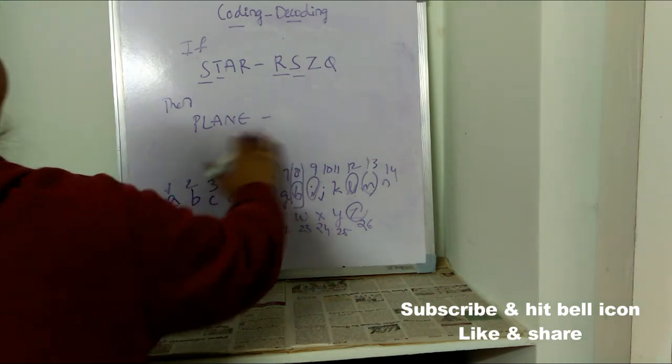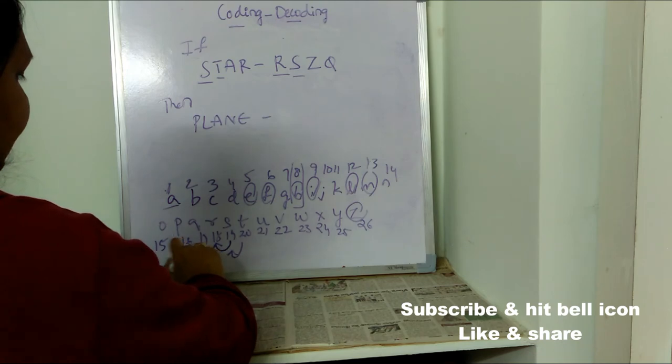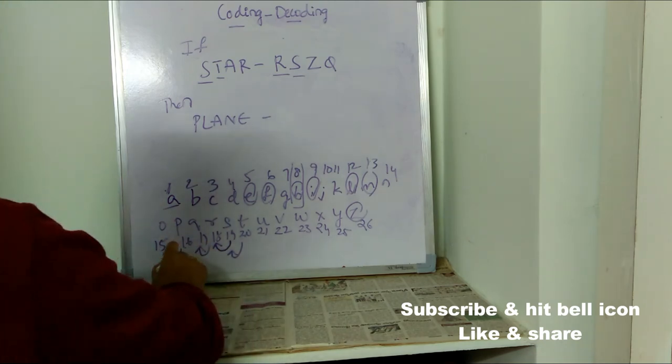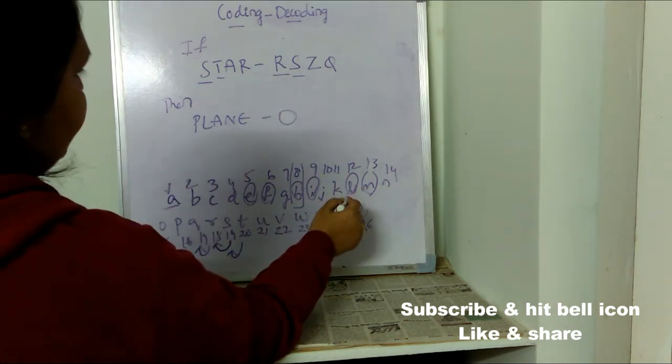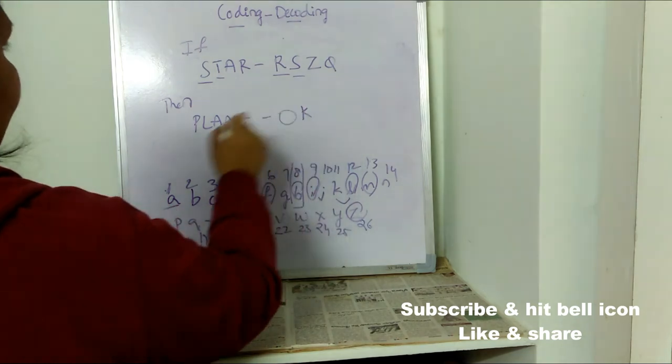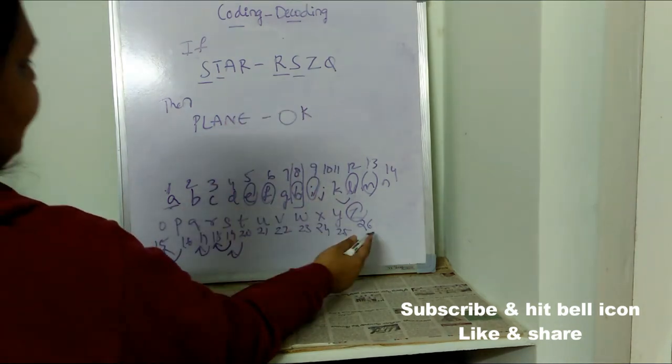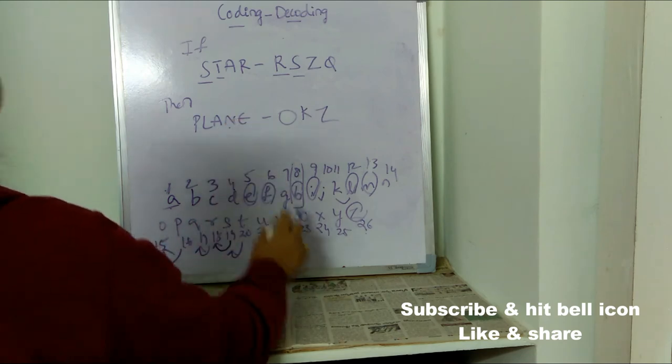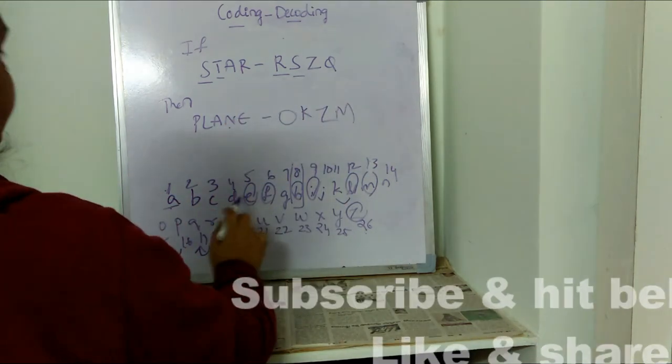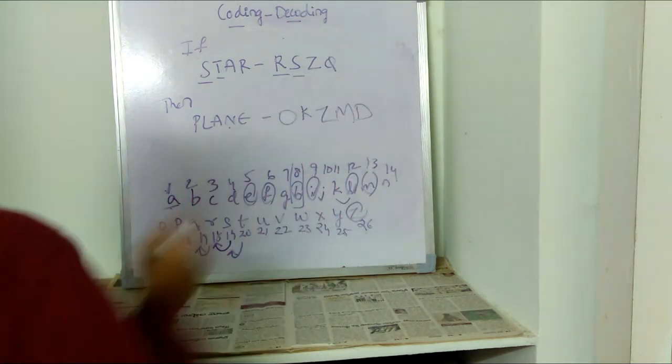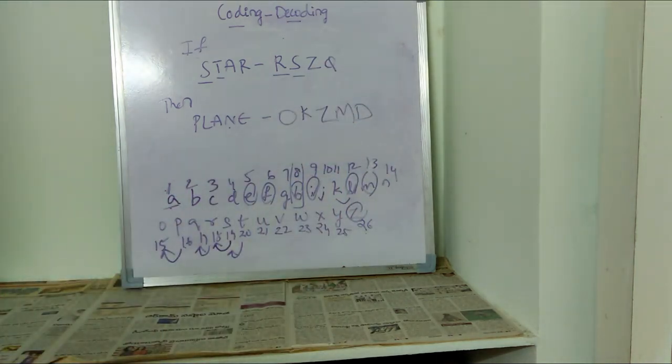Before P there is O. Just move one step backward. Before L there is K. Before A there is Z. Before N there is M. Before E there is D. So PLANE can be written as OKZMD like this. You need to decode the given coding.